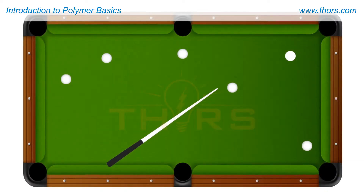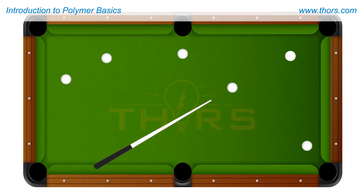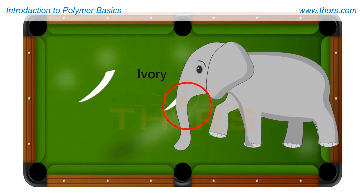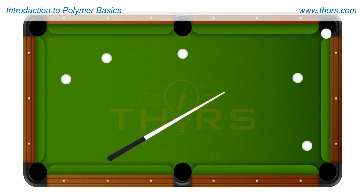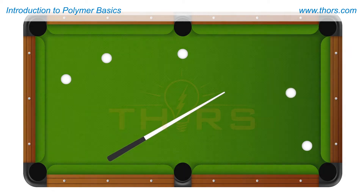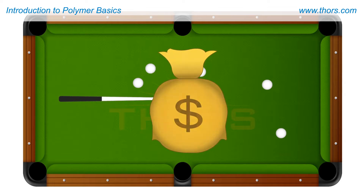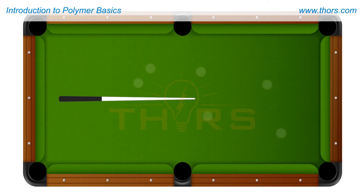The invention of synthetic polymers was prompted by the demand for billiard balls in the 19th century. The early billiard balls were made of ivory, sourced from the tusks of elephants. Ivory was an expensive and limited resource. A pool table maker advertised a hefty reward to customers for coming up with an alternative material for fabricating billiard balls.